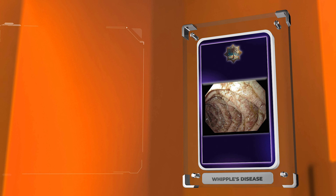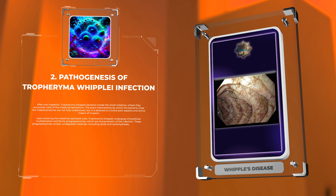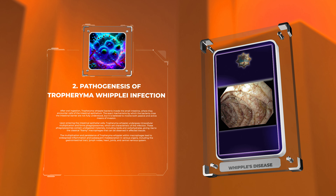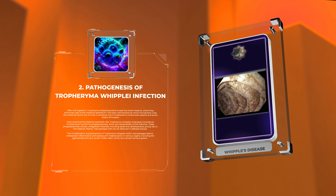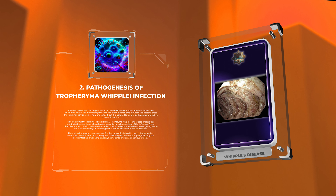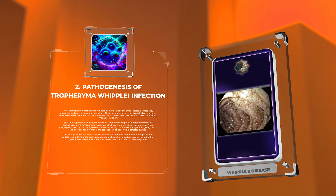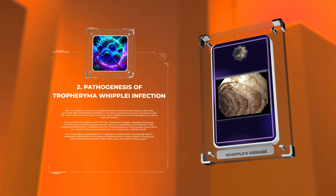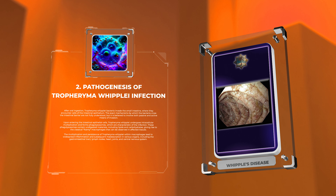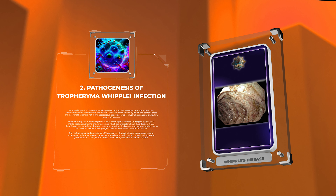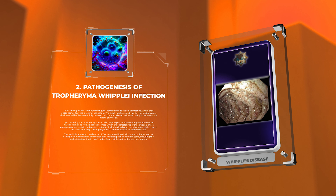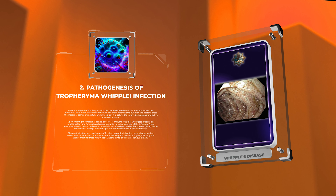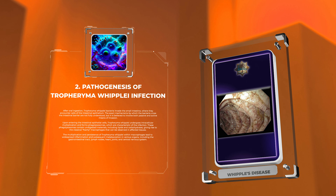After oral ingestion, Tropheryma whipplei bacteria invade the small intestine, where they encounter cells of the intestinal epithelium. The exact mechanisms by which the bacteria cross the intestinal barrier are not fully understood, but it is believed to involve both passive and active means of invasion. Upon entering the intestinal epithelial cells, Tropheryma whipplei undergoes intracellular multiplication and forms phagolysosomes, which are characteristic of the infection. These phagolysosomes contain undigested materials, including lipids and carbohydrates.